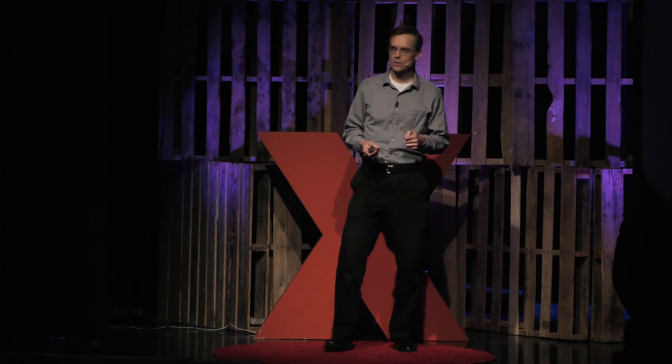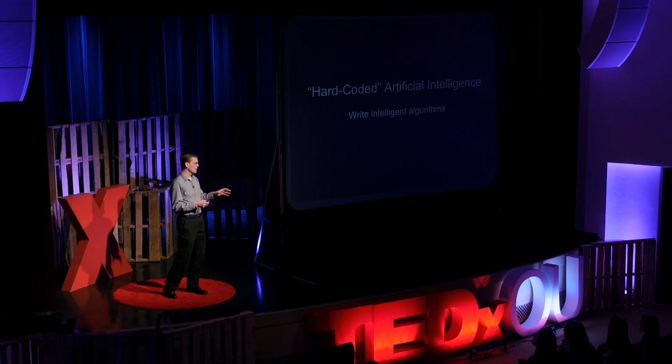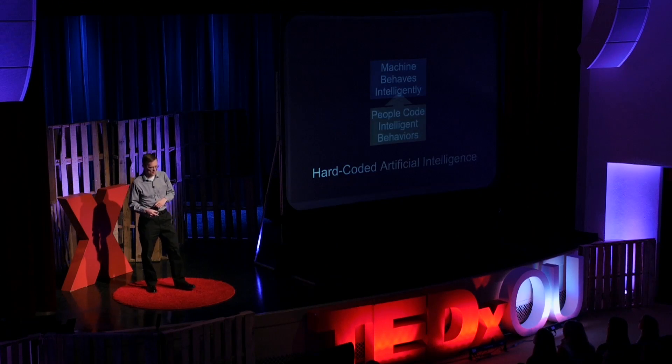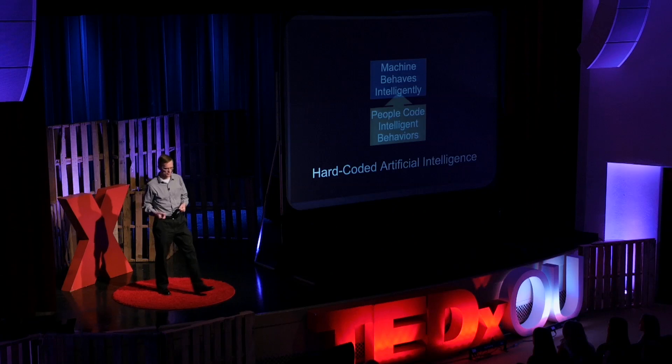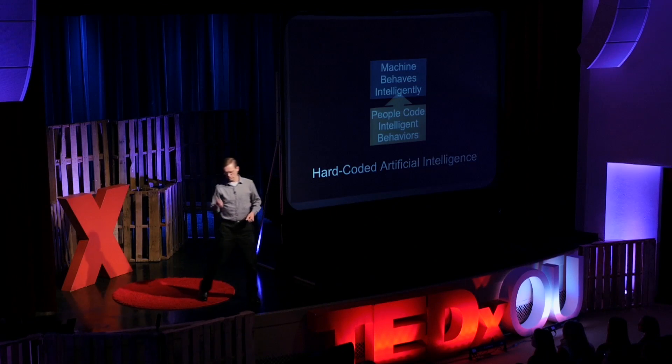So how do you make intelligence? There are lots of different approaches you could take. The first approach might be the hard-coded intelligence approach. In this idea, you imagine some task that it takes people or animals' intelligence to carry out, and you write an algorithm that's going to do that. So we code up what the intelligent behavior looks like, and the machine is supposed to behave intelligently. I like to think of this as the broad jump approach to artificial intelligence — you just get up as close as you can to that line and jump as far as you can.